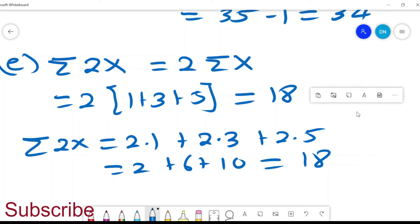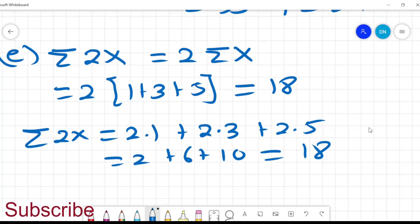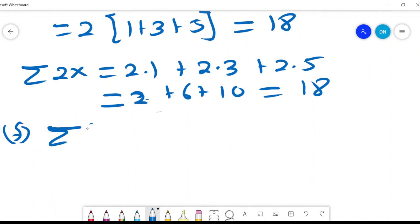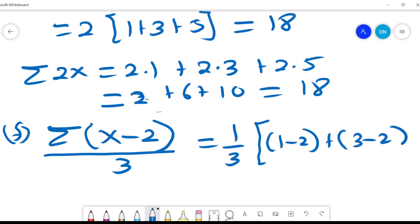For example, summation of (x minus 2) divided by 3. What is divided by 3? I can put 3 outside as a fraction and then say summation of (x minus 2). So it's (1 minus 2) plus (3 minus 2) plus (5 minus 2). And that's the equation we have because everything is being divided by 3, therefore I'll put that outside.